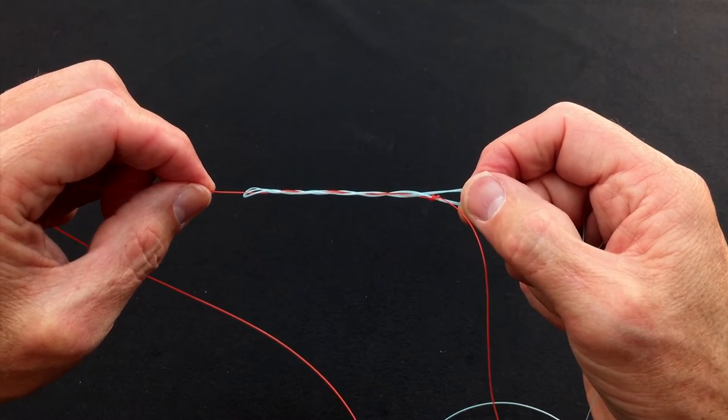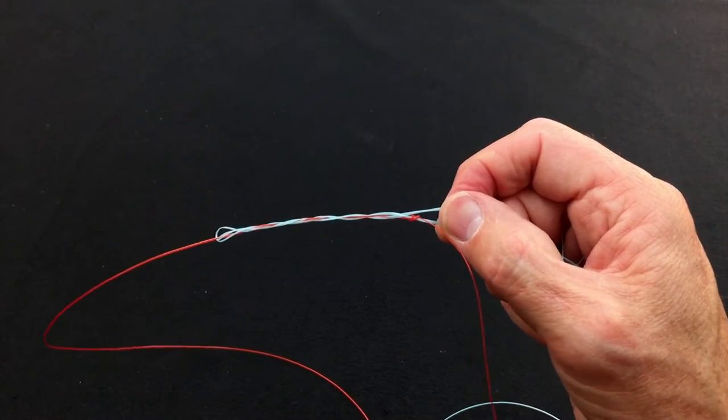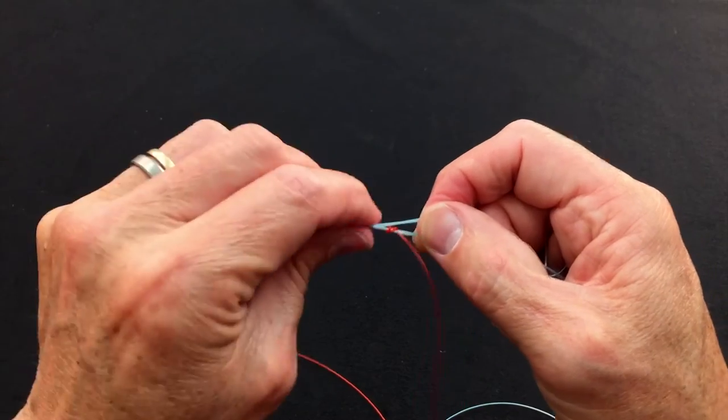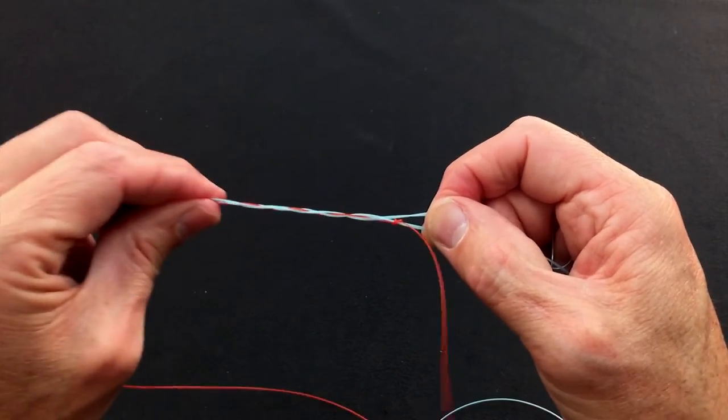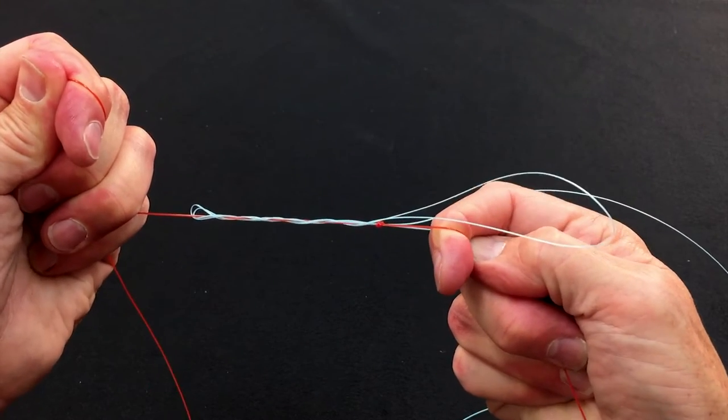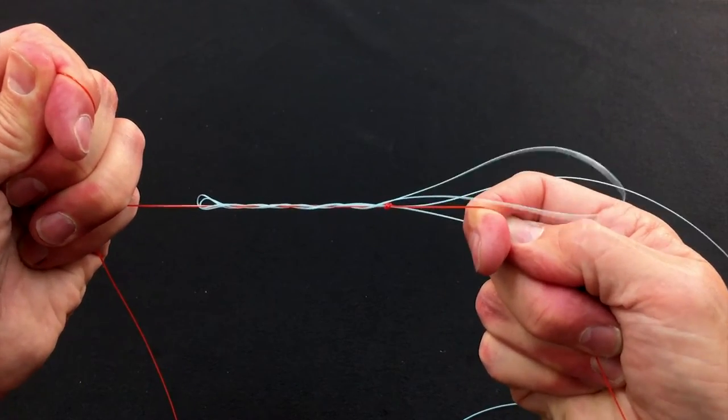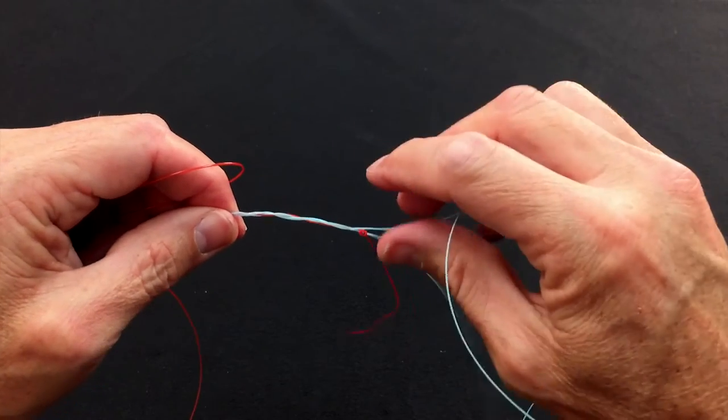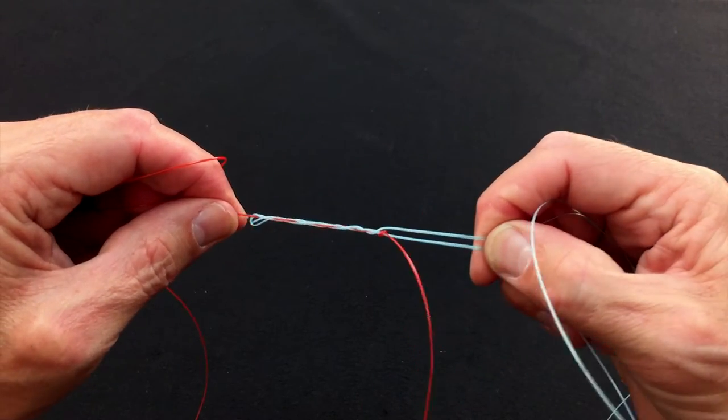So like all knots, of course, what you've got to do is lubricate it. So we get a little moisture on here, chapstick, lick, whatever you like to do. And at this stage, I like to pull the figure of eight knot to about 85%, 90% tight at this stage of the red. And then you basically manipulate this thin stuff and just pull it down.